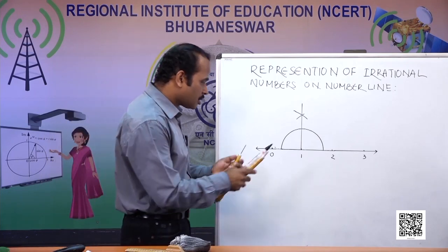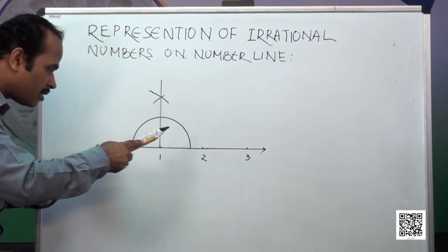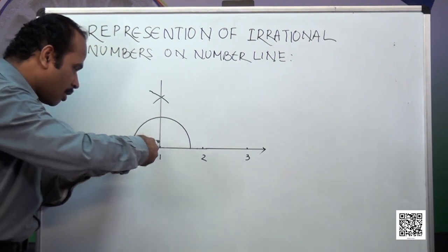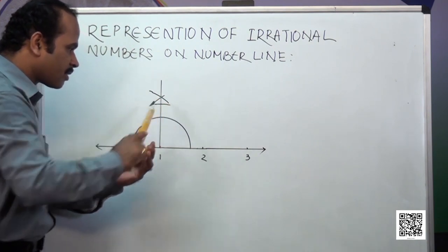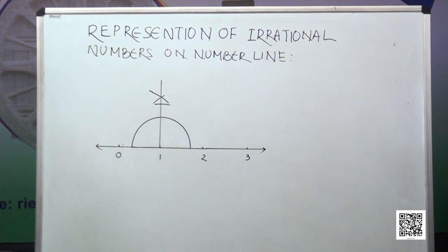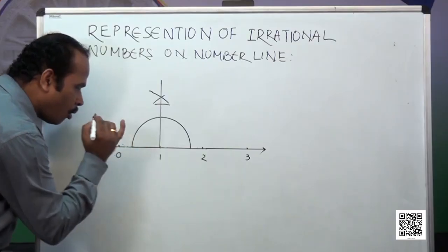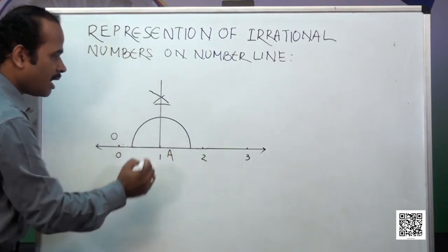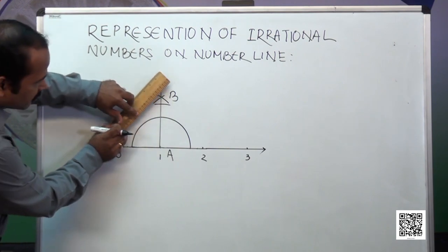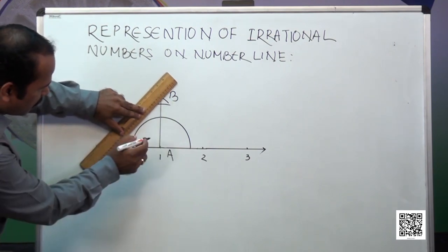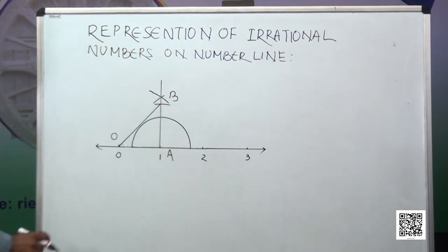Now, this is 0, and from 0 to 1 is 1 unit. Let me select this 1 unit here and on this line I will cut the same 1 unit. Let me name the points: this is O, this point is A, and this point is B. Now I will join O and B. By joining O and B, I find a right angle triangle OAB.